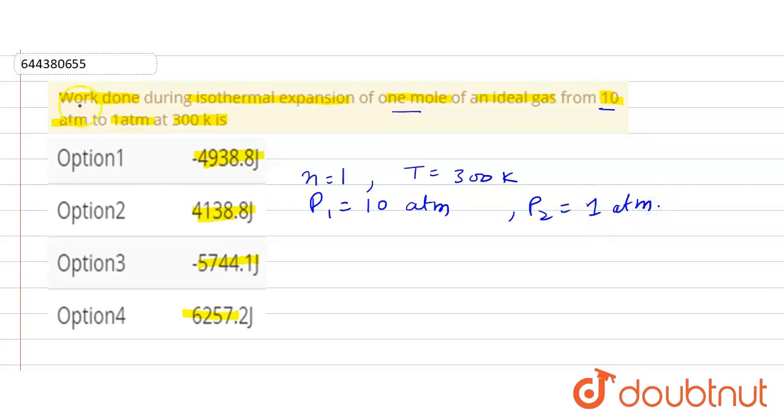So now we need to find the work done during isothermal expansion. The formula for the work done during isothermal expansion is W equals negative 2.303 n R T log P1 divided by P2.